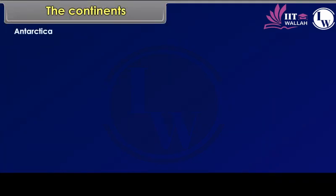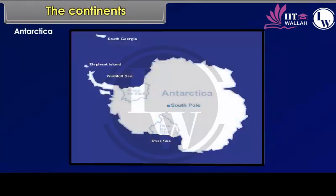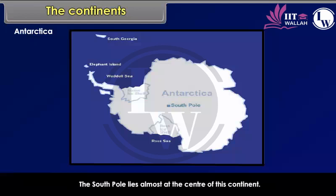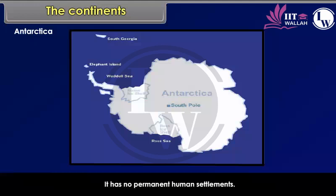Antarctica is completely in the southern hemisphere. It is a continent larger than Europe and Australia put together. The South Pole lies almost at the centre of this continent. Hence, the continent is permanently covered with thick ice sheets. It has no permanent human settlements.